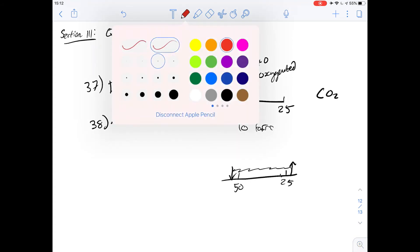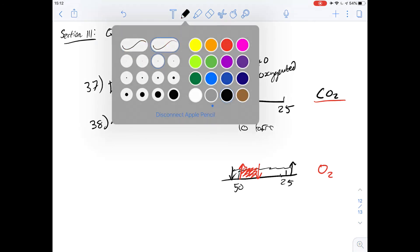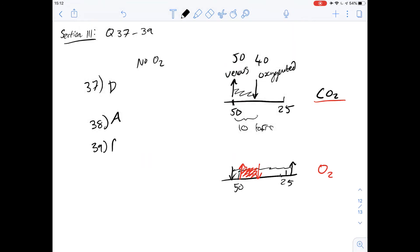If we were to put the arrows for carbon dioxide onto the oxygen graph, we can see that there'd be an arrow here and roughly another one here. And so because there is an overlap in this section here, there is a point in the bloodstream at which the oxygen partial pressure equals that of carbon dioxide. So that means the answer for number 39 is B.